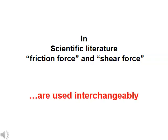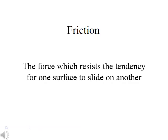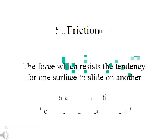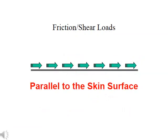In the scientific literature, friction force and shear force are used interchangeably, reflecting a change in language and semantics from when the research was first conducted on tissue trauma to more modern terminology, but they are used interchangeably. Friction is the force which resists the tendency for one surface to slide on another. The word shear is usually used as an adjective describing a type of force, stress, strain, or distortion. It is important to remember that friction and shear loads run parallel to the skin surface, while pressure is perpendicular to the skin.